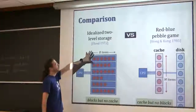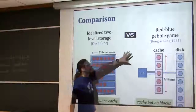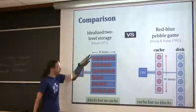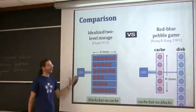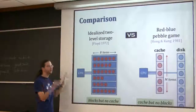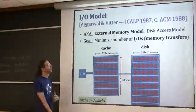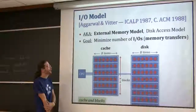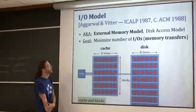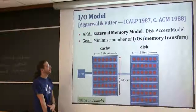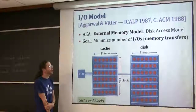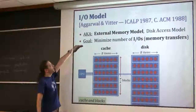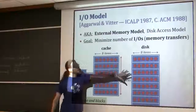At this point, we have two models: the idealized two-level storage of Floyd, and the red-blue pebble game of Hong and Kung. The pebble game models caching - you can store a bunch of things - but it does not have blocks. Floyd's model has blocking but does not have a cache, or has a cache of constant size. So the idea is to merge these two models. This is the Aggarwal-Vitter paper from 1987 - many of you have heard of it. It has many names: IO Model, external memory model, disk access model.